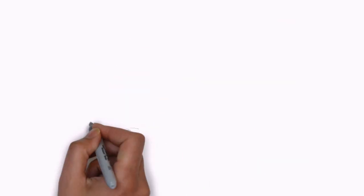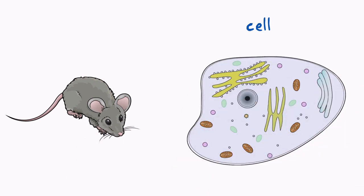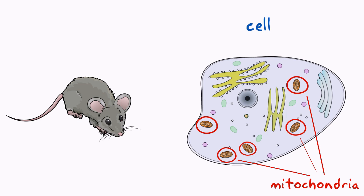The researchers have managed to reverse the effects of aging in mice using an approach that restores communication between a cell's mitochondria and nucleus. Mitochondria are the power supply within the cell, generating the chemical energy required for key biological functions. When communication breaks down between mitochondria and the nucleus, which is the cell's control center, the effects of aging accelerate.